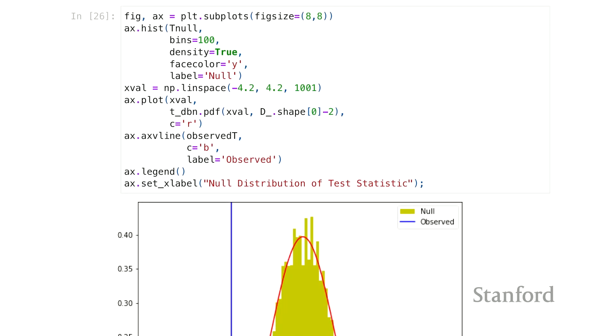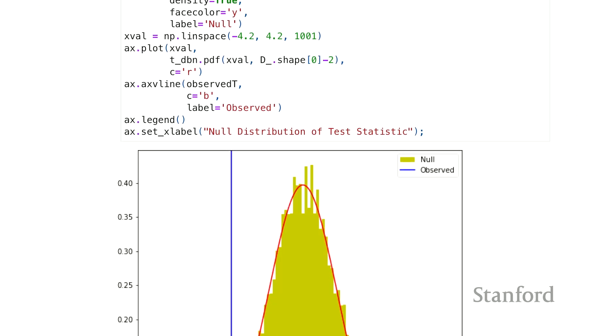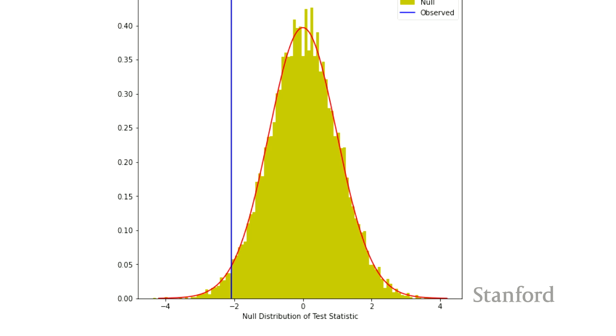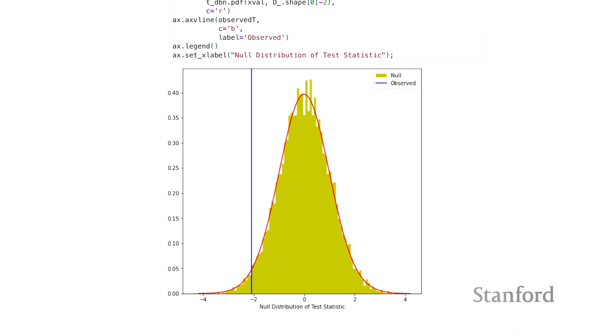Let's just take a look at the collection of those t-statistics. So what we're plotting here is a histogram of those 10,000 statistics we computed by shuffling the data or random, under the null. And the red curve is the actual t-distribution.